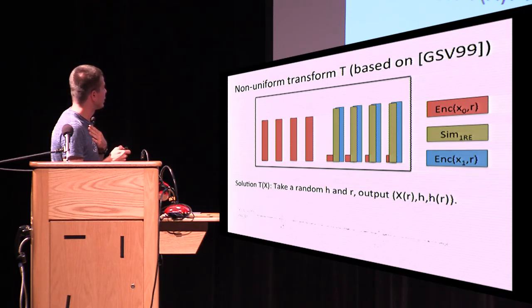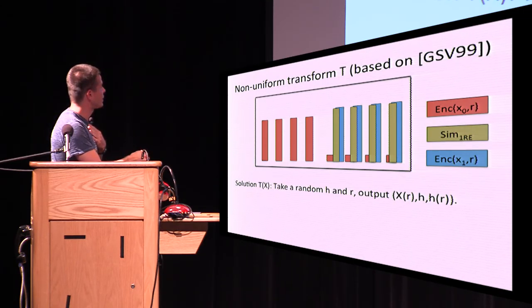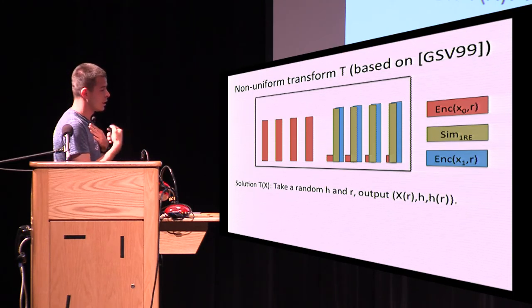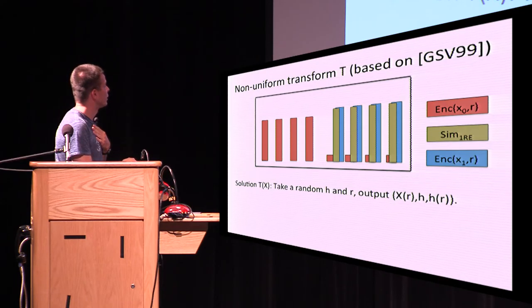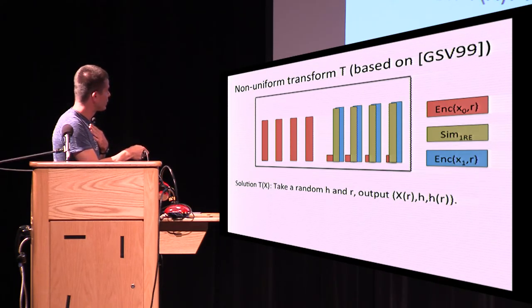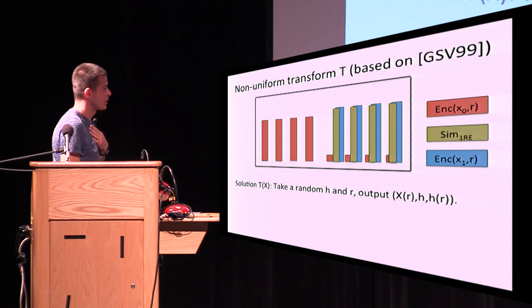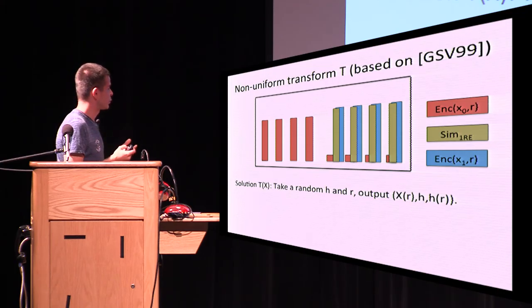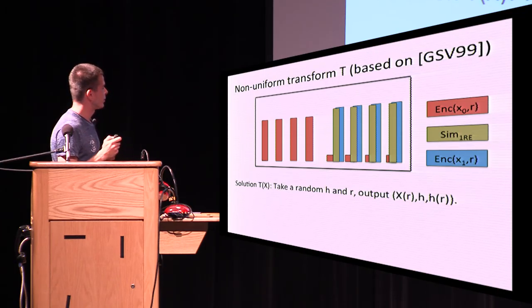The main idea: given that you know the entropy of a distribution, you can output for every sample the weight of that sample. The red samples have small weight and the green and blue samples have bigger weight. This allows you to make the distributions either disjoint or keep them close to each other.